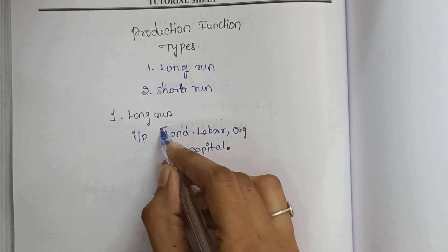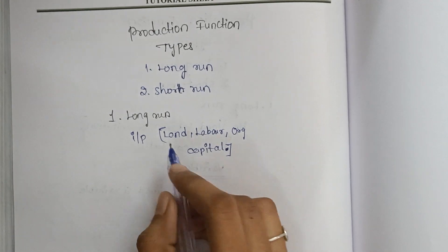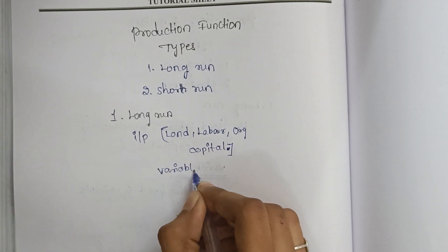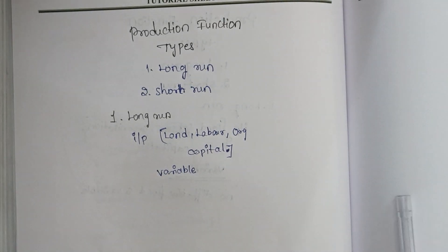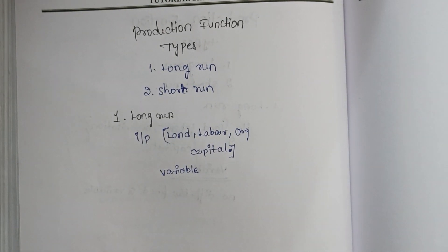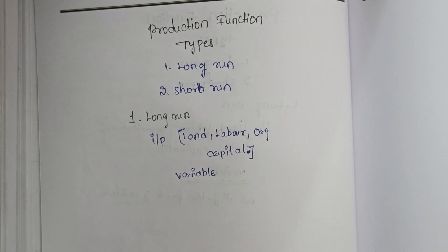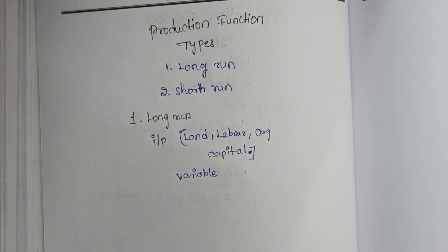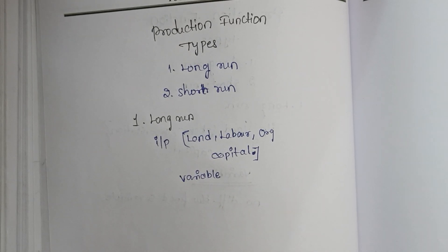These input factors will be changing in the long run. Suppose a company has a lifetime of 15 years — in those 15 years, how will production change? Sometimes the production may be high and sometimes it will be low, so there is change in the production.